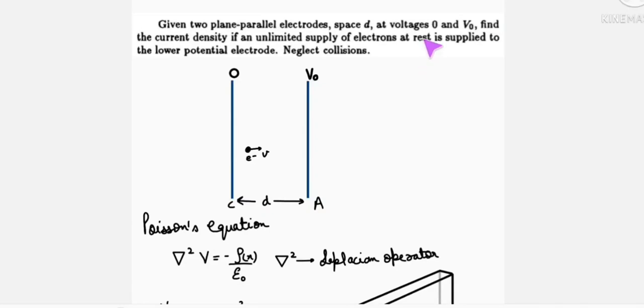Given two plane parallel electrodes spaced at a distance D, with voltage 0 and V0, find the current density if an unlimited supply of electrons at rest is supplied to the lower potential electrode. Neglect collisions.